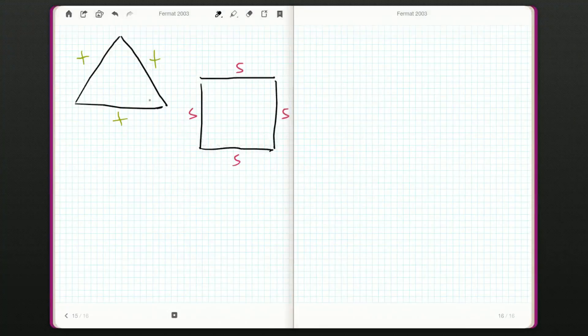So t plus t plus t, that's 3t. That's the perimeter of the triangle. And s plus s plus s plus s, that's 4s. That's the perimeter of the square. Okay, so we know 3t is equal to 4s.